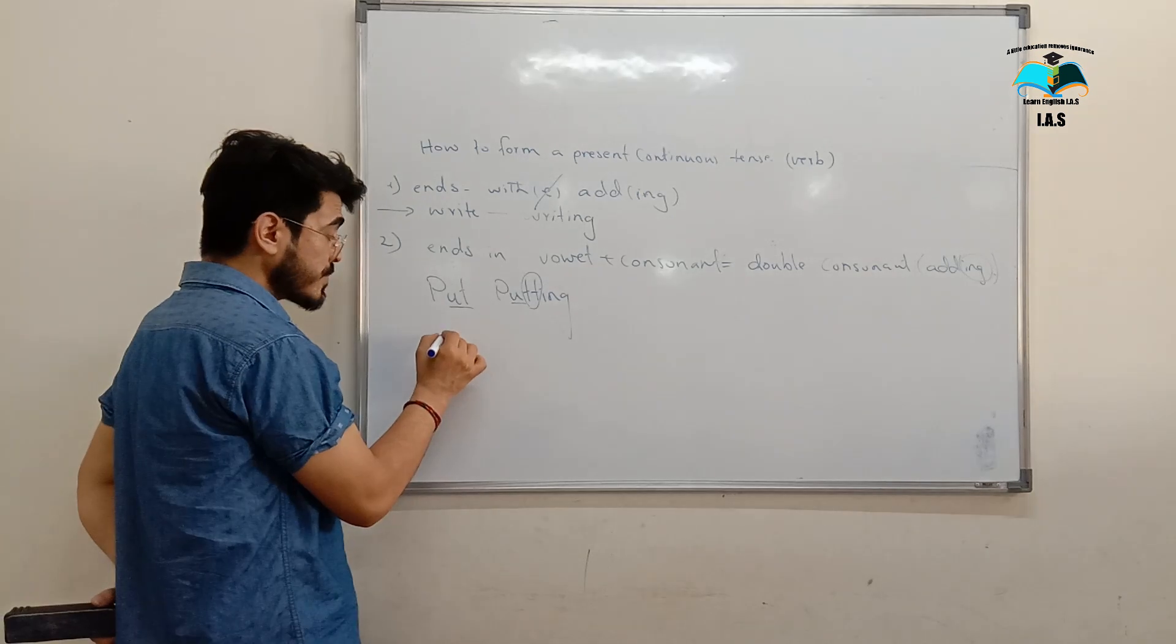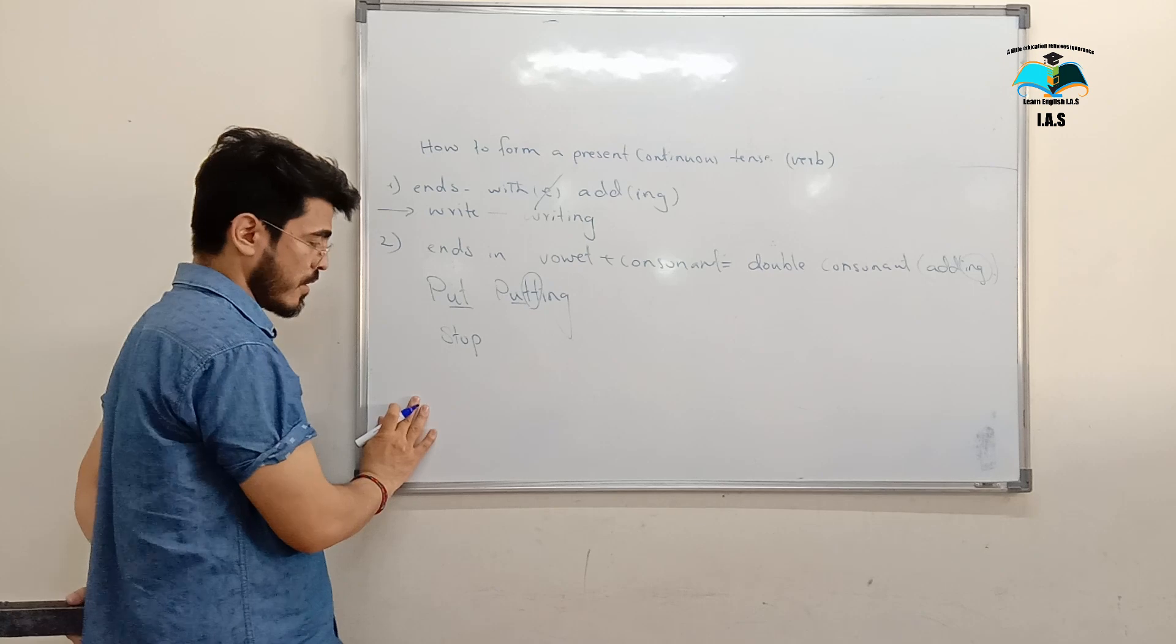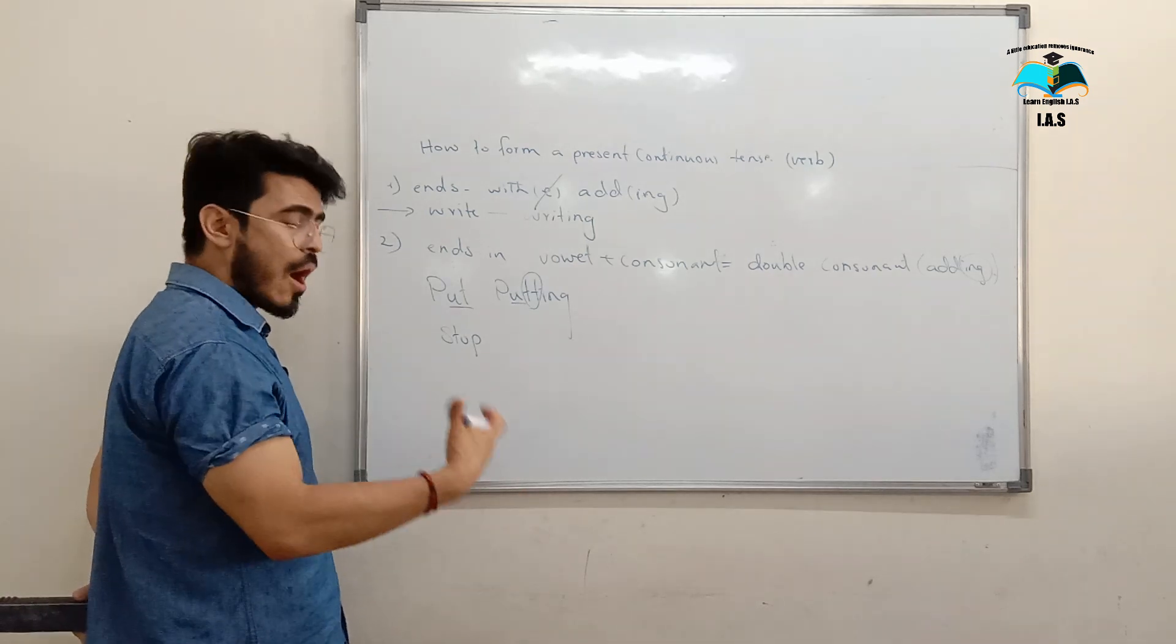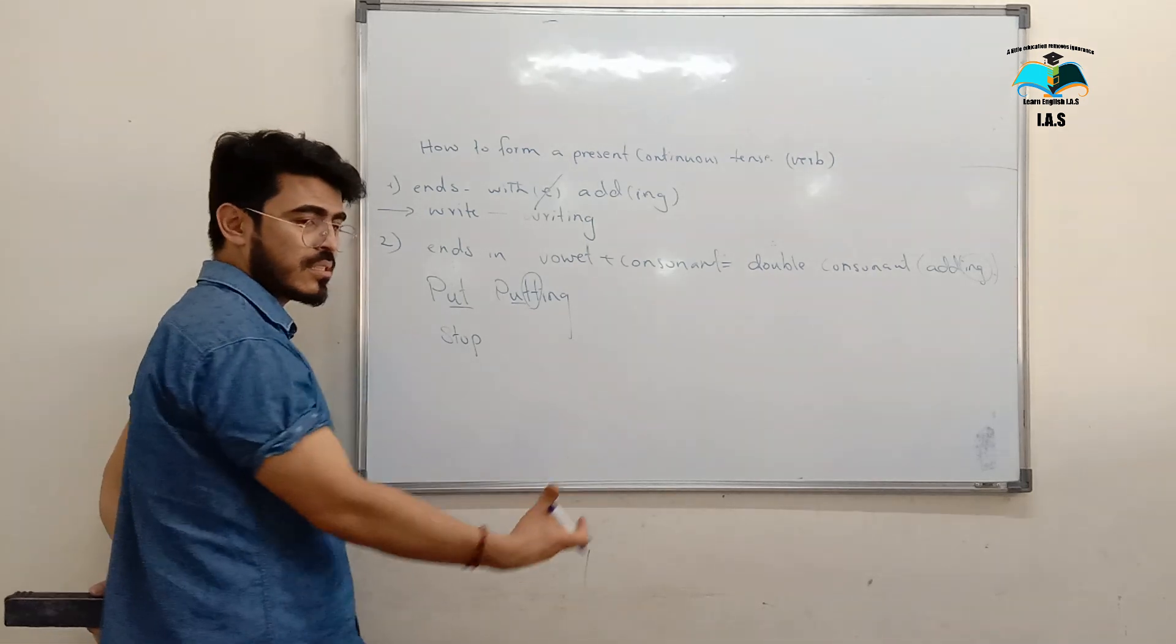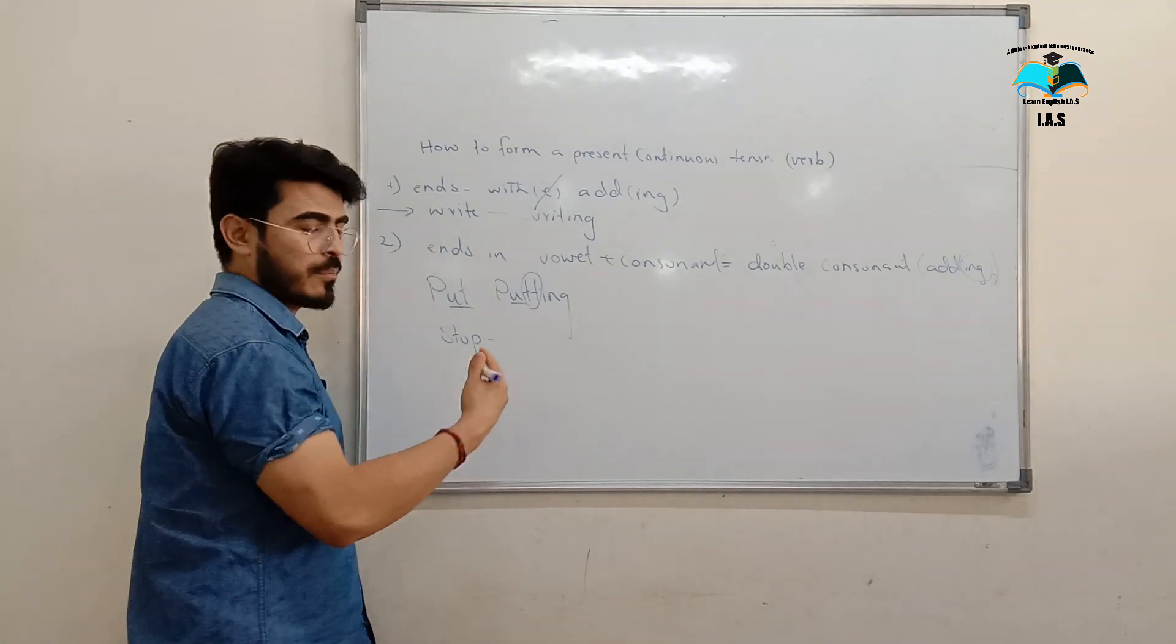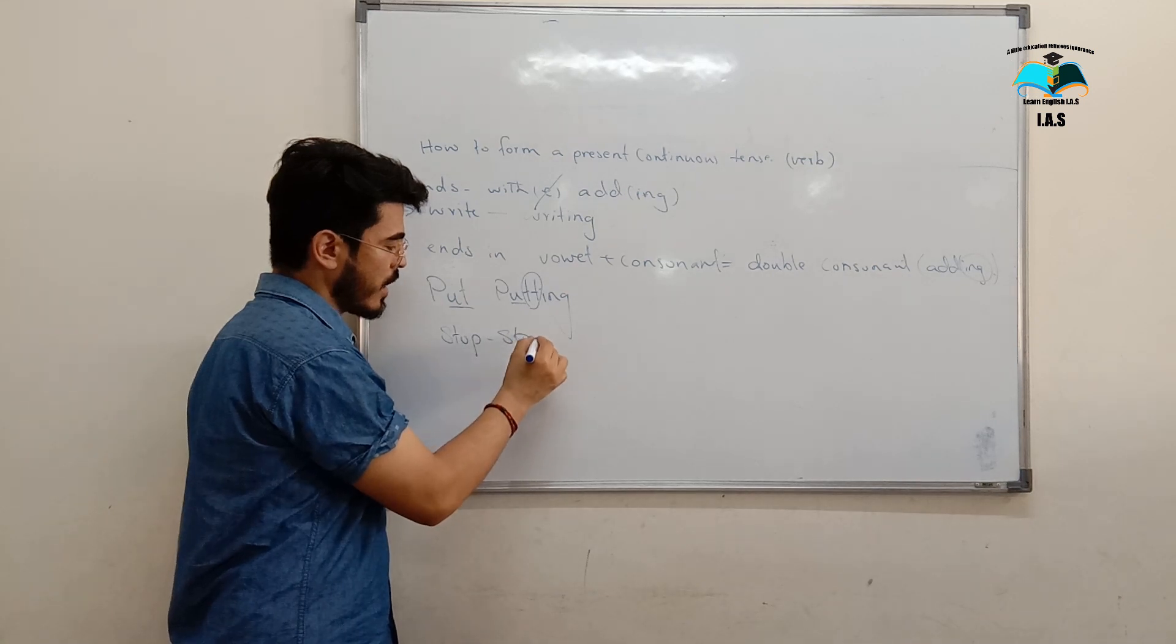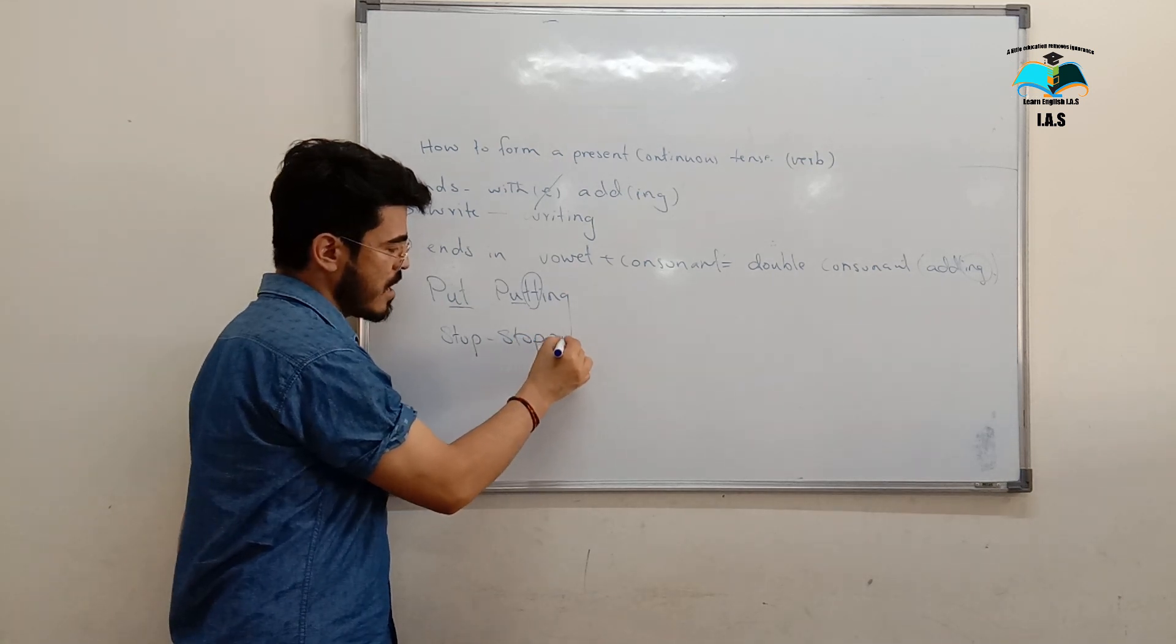Now, what is this? 'Stop.' Very good. Now you help me, how to change 'stop' into Present Continuous Tense form? Add ING. Spell it please: S, T, O, double P, ING.